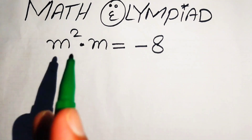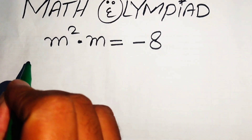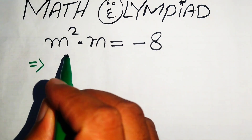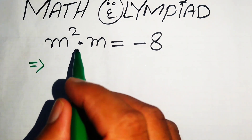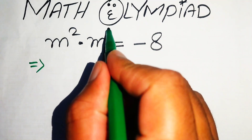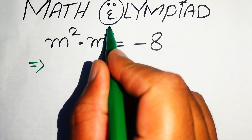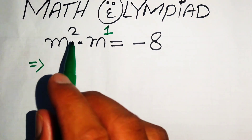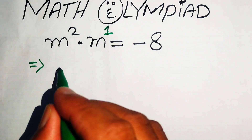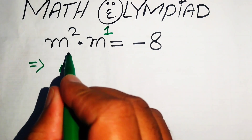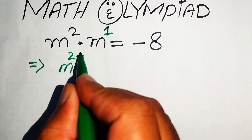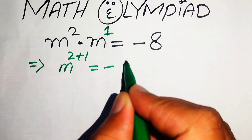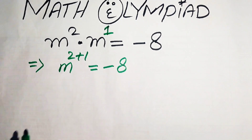The very first step: we have two variables multiplied by each other whose bases are the same. According to the exponential law, we just add the exponents of these two terms. When we add the exponents, it becomes m to the power of 2 plus 1, which equals minus 8.